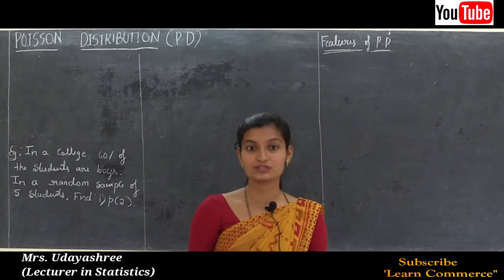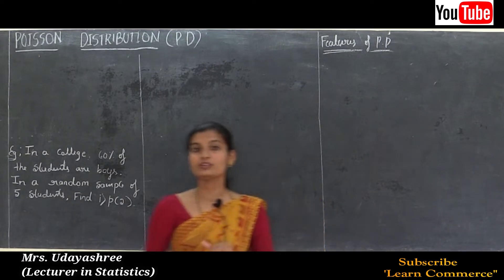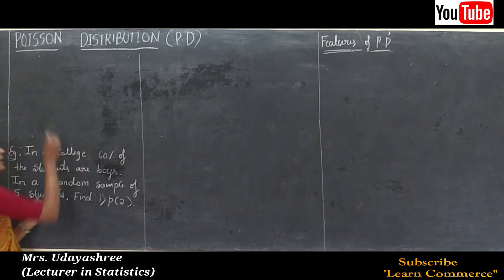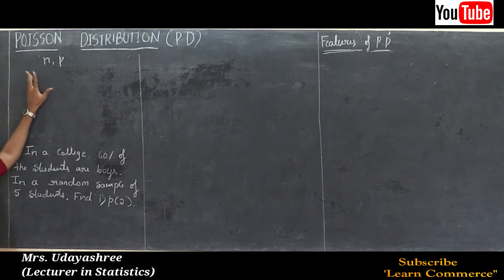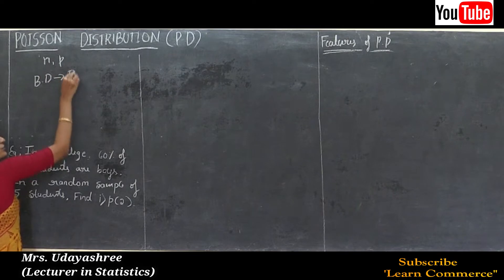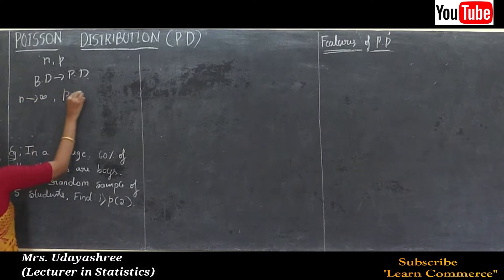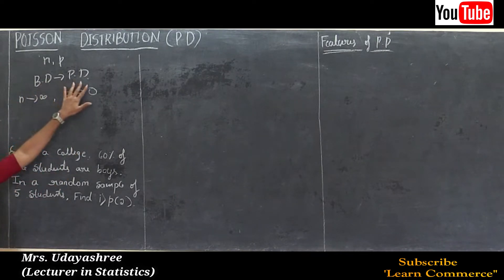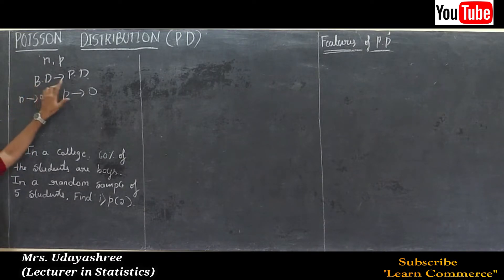In the previous class we discussed about binomial and Bernoulli distributions. Today we are going to discuss Poisson distribution. The parameter of binomial distribution is n and p. Binomial distribution tends to Poisson distribution when n is large and p is small.